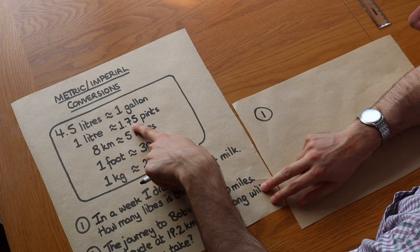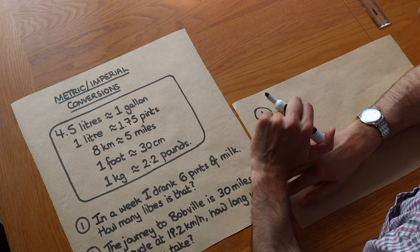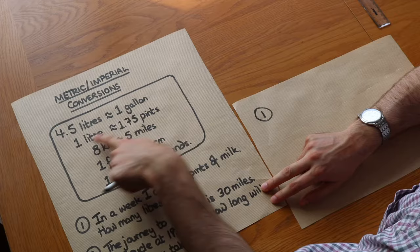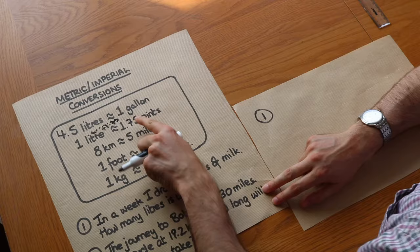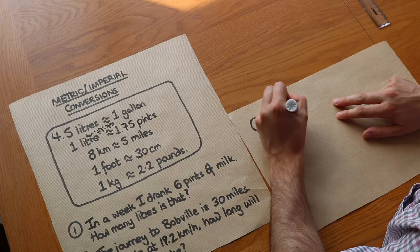So we're going from pints to litres. How do you get from 1.75 to 1? Well you just divide by 1.75. Similarly if you're going from litres to pints you can see to get from the 1 to 1.75 you would times by 1.75. So we're going from pints to litres, we are dividing by 1.75.